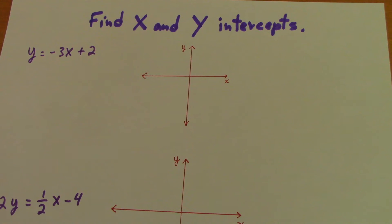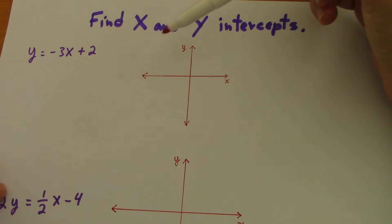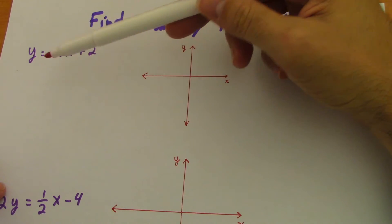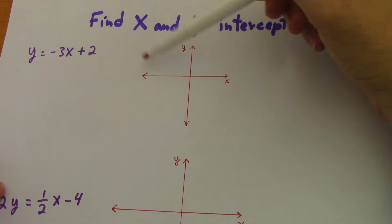Okay, let's find x and y intercepts. To find x and y intercepts is very easy. You just give, to find the x intercept you give 0 to y and to find the y intercept you give 0 to x.